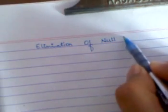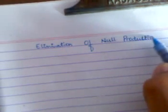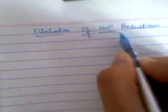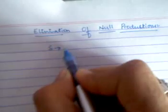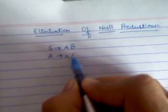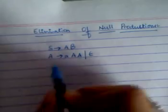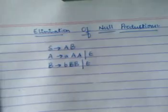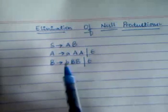Let me explain how to eliminate null productions. Let us consider a simple grammar. The grammar looks like this: S gives AB, and A produces AA and null.